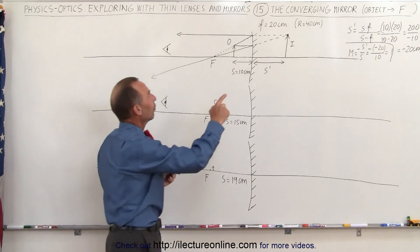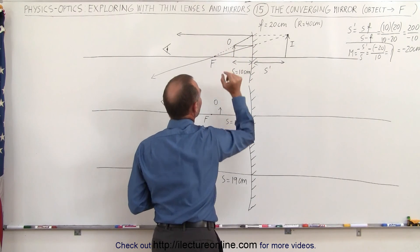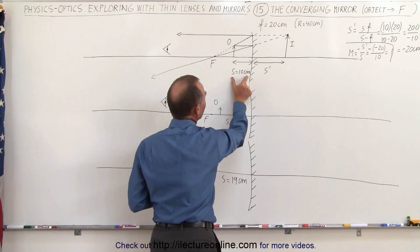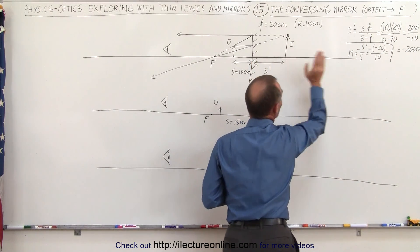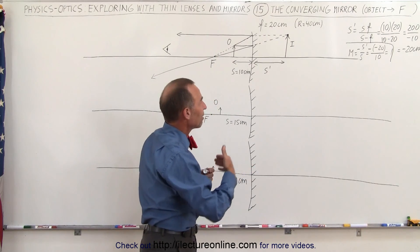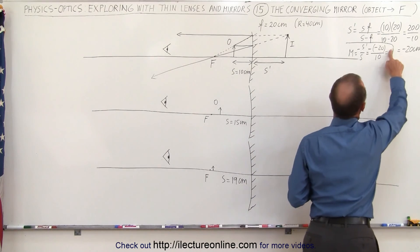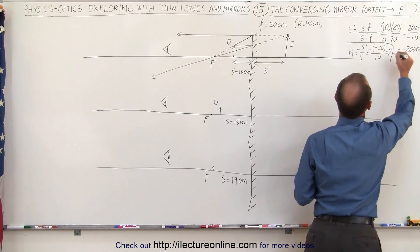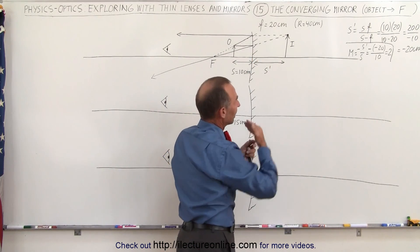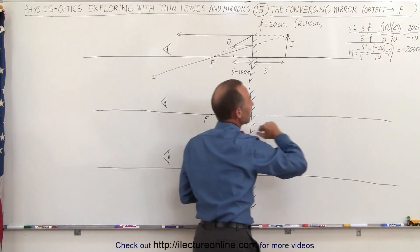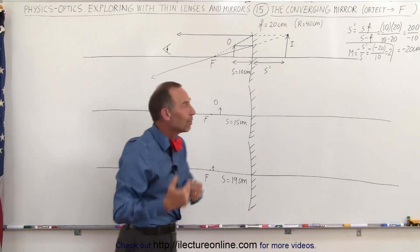We already did this one before. Notice when we place the object right halfway between the focal point and the mirror at a distance of 10 centimeters, the image will be at minus 20 centimeters. Minus means behind the mirror, and therefore a virtual image. The magnification is a positive 2, so the image is twice as large as the original object. It's virtual, it's behind the mirror, and the positive magnification means the image is upright.